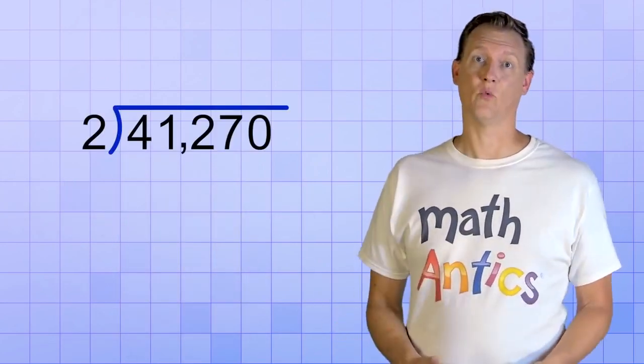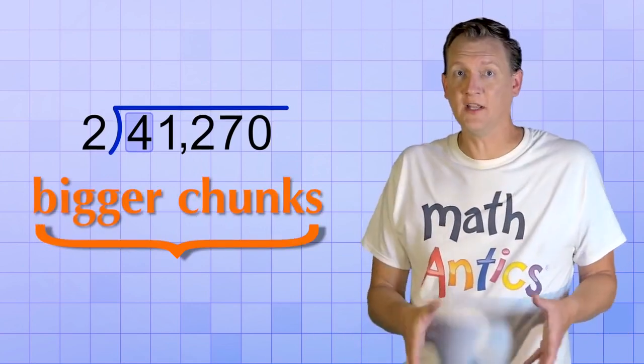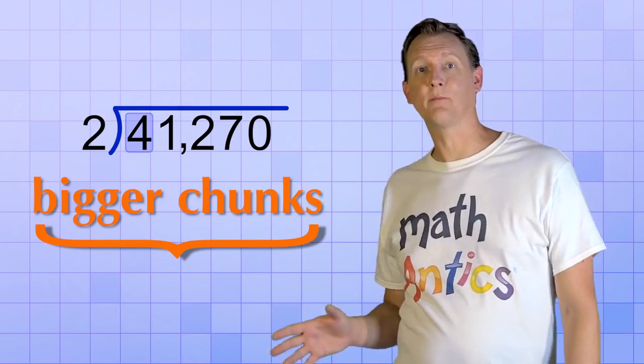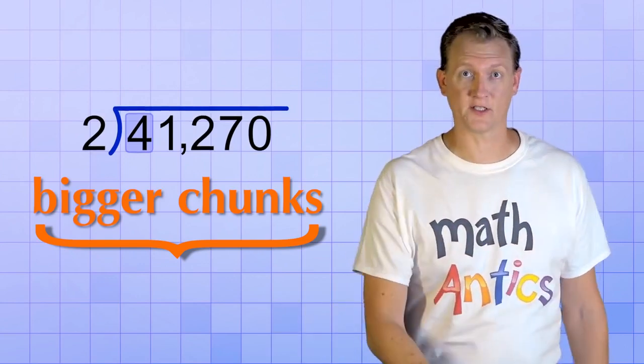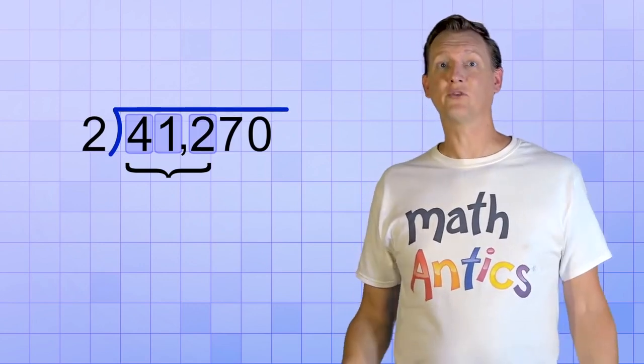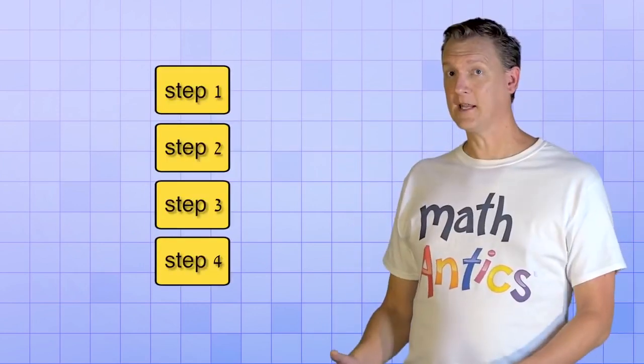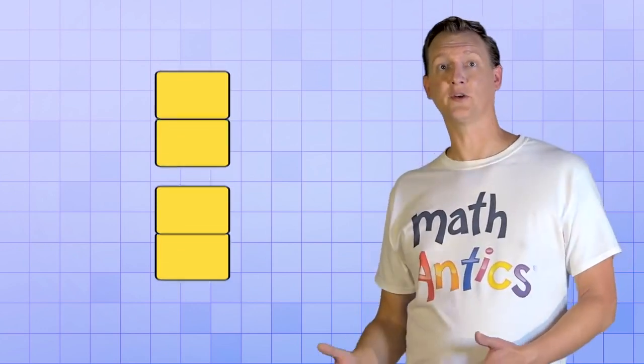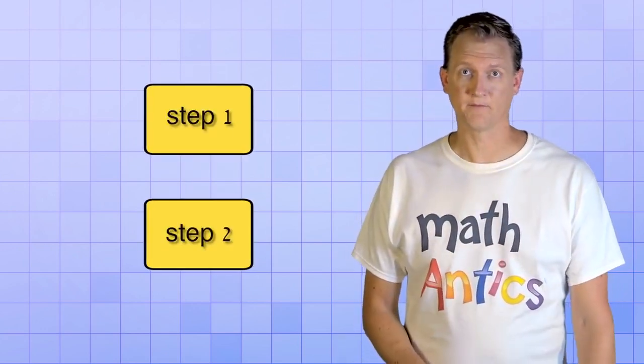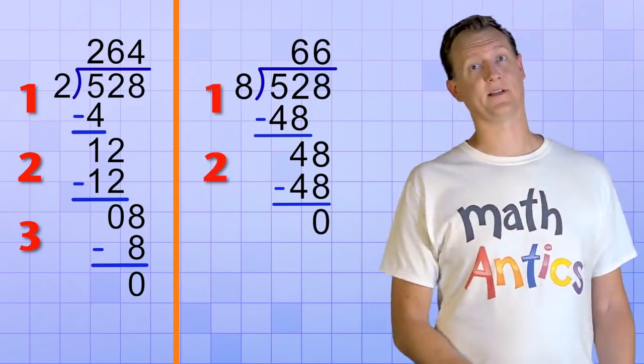You don't always have to go 1 digit at a time. You can break the dividend up into bigger chunks of digits if you want, and apply the same procedure to those bigger chunks. You could go 2 or 3 digits at a time. Or even try to divide the entire dividend all in one step. And taking bigger chunks of the dividend usually results in fewer division steps. Notice that there were 3 steps in the first problem, but only 2 steps in the second problem.